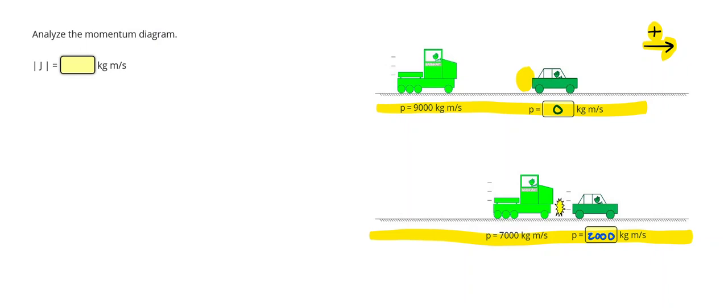This problem asked us to calculate the impulse. So remember, the impulse is the change in momentum of one object. So let's look. How much momentum did the truck gain or lose? Well, the truck started with 9,000 and ended up with 7,000. So it lost 2,000. We see that these absolute value signs means that we want a positive answer right here. And that's 2,000.